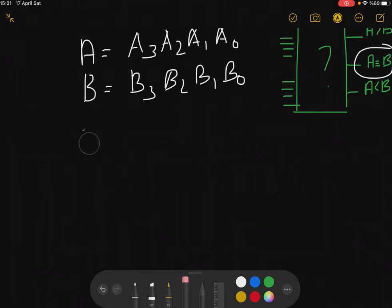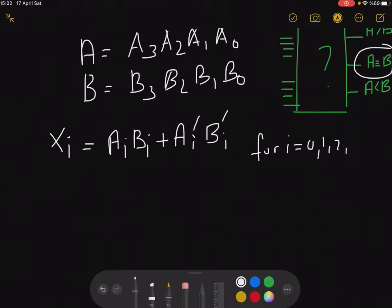If we generalize this for all of the bits, your AᵢBᵢ plus your Aᵢ not Bᵢ not is what we're looking for here. And if we name this as Xᵢ, this is what we check, where the value for i is from zero, one, two, three.